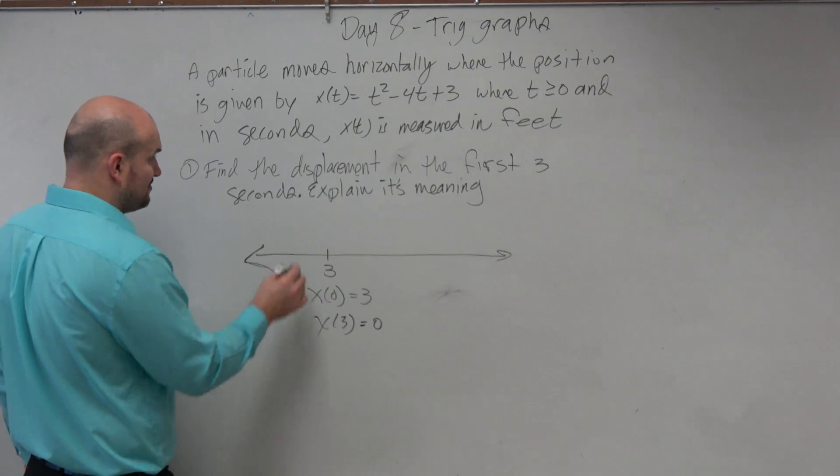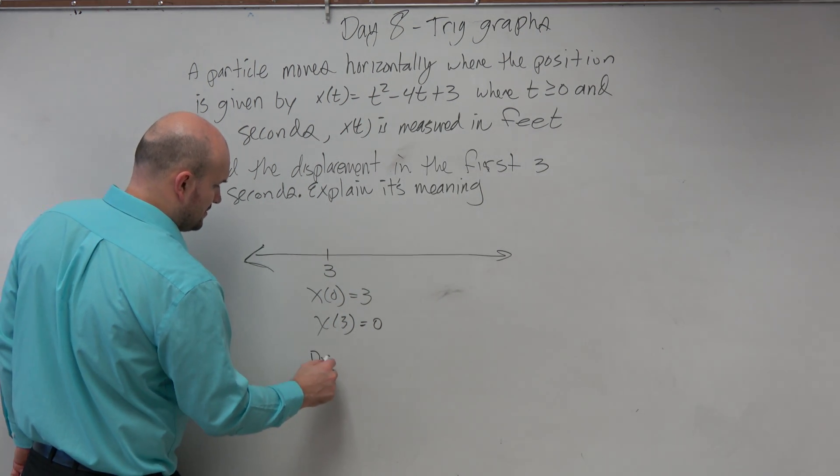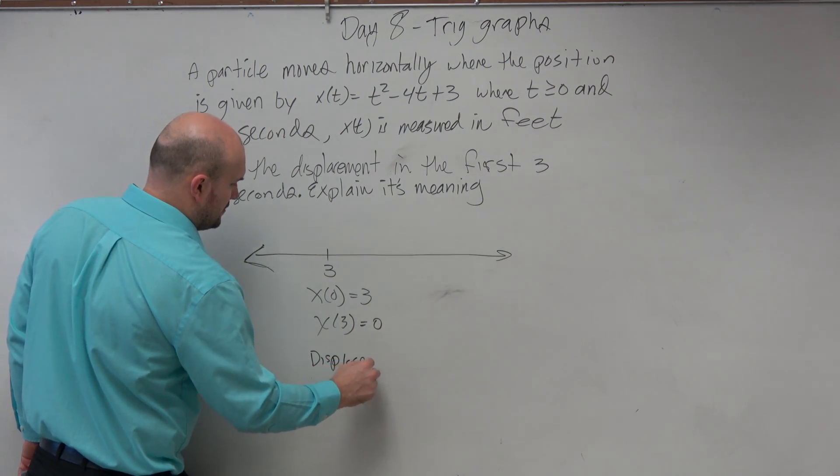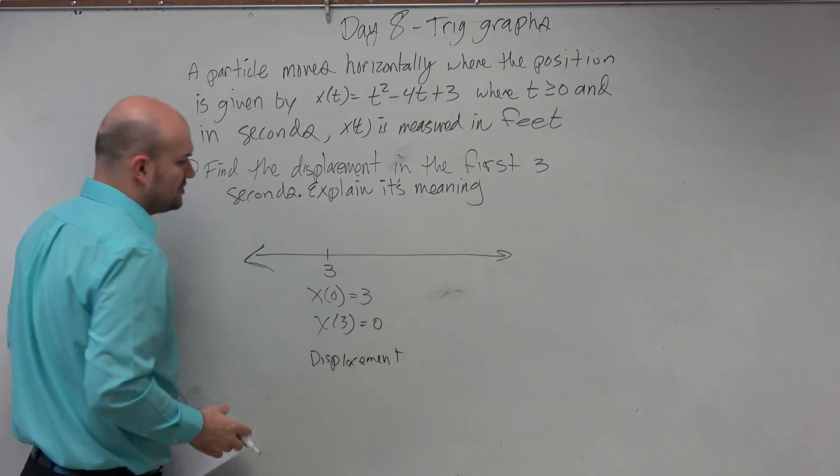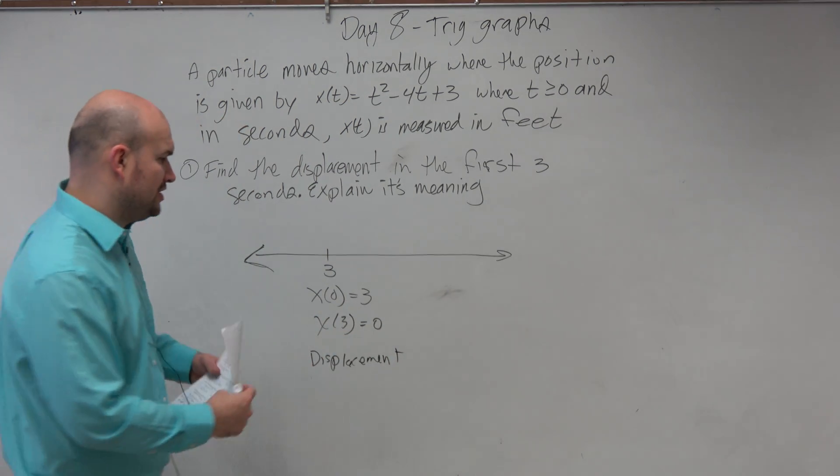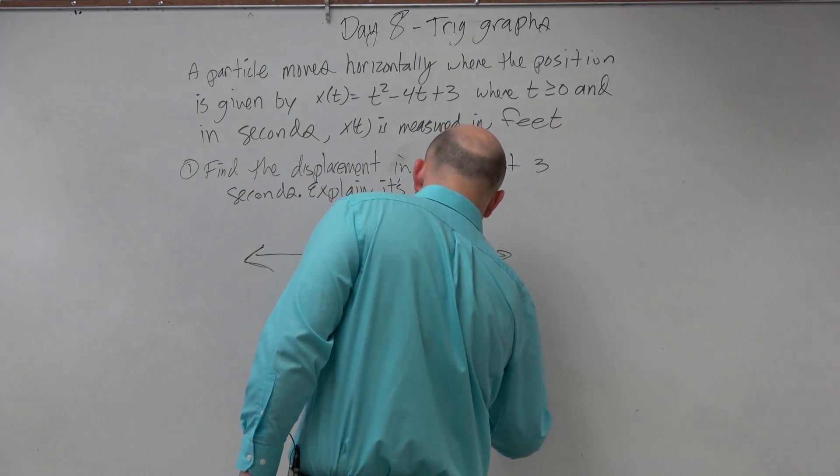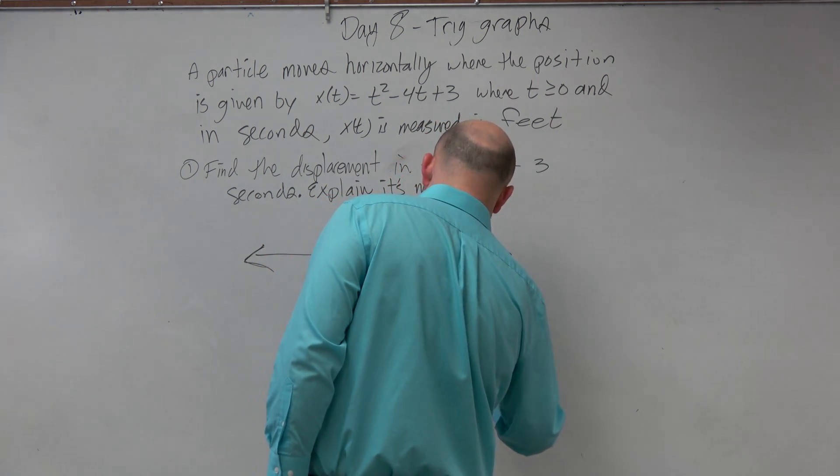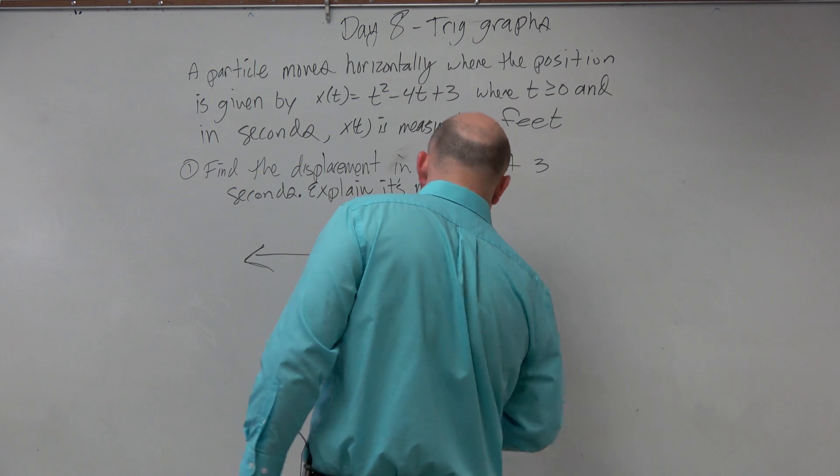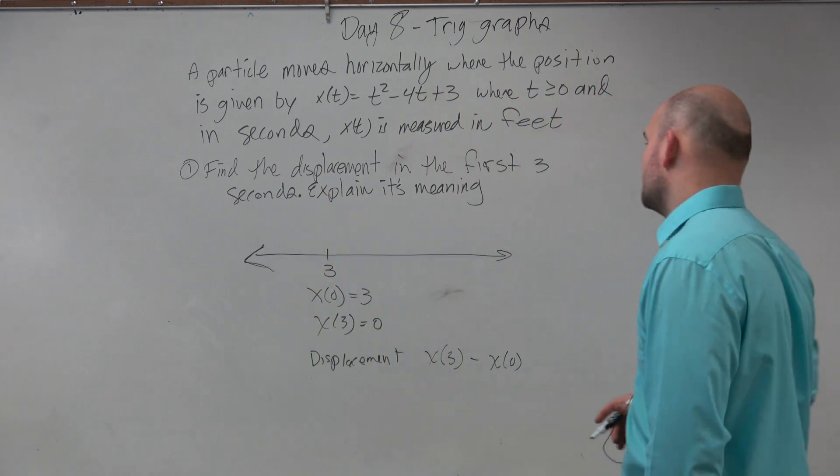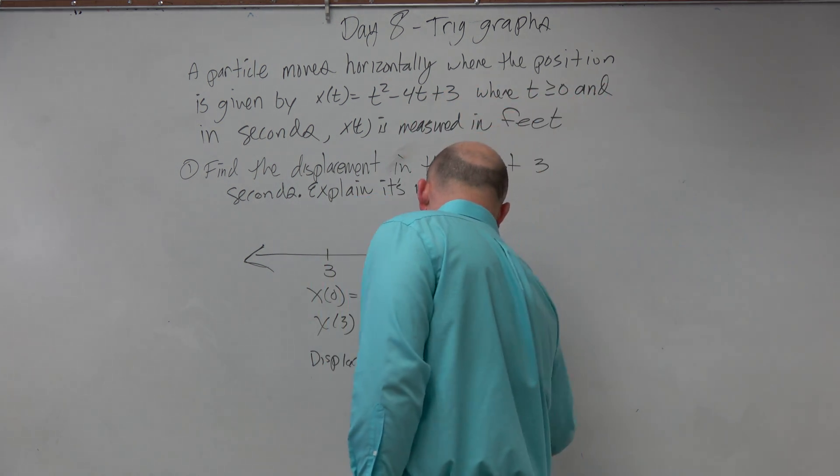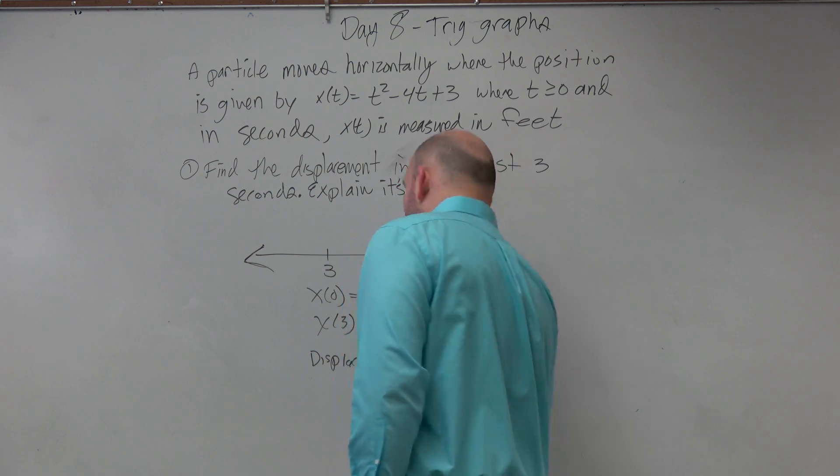So when you want to find the displacement, we're trying to see, all you're doing is taking your final position, x of 3, minus your initial position, x of 0. So therefore, in this case, we have 0 minus 3, which equals negative 3.